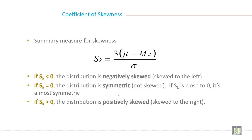Summary measure for skewness. If skewness is less than 0, the distribution is negatively skewed, skewed to the left. If skewness is equal to 0, the distribution is symmetric, not skewed. If skewness is close to 0, it is almost symmetric. If skewness is greater than 0, the distribution is positively skewed and skewed to the right.